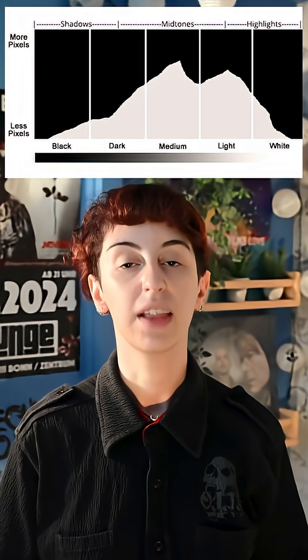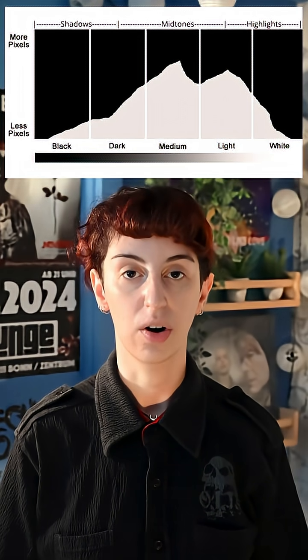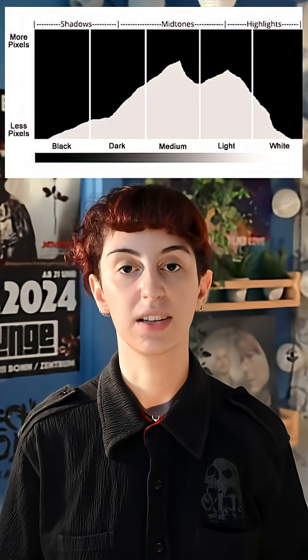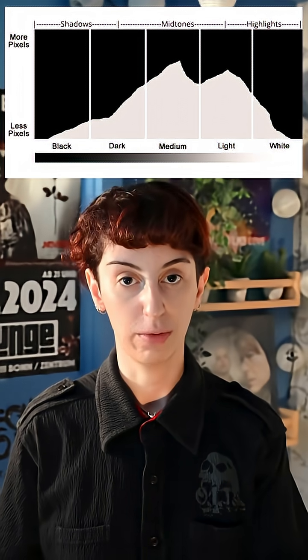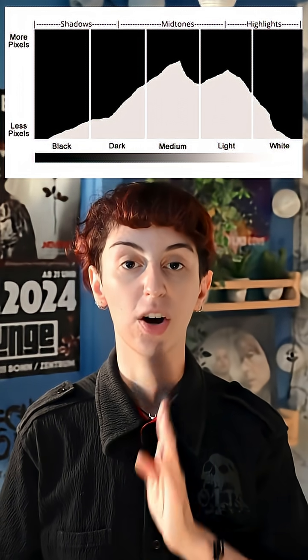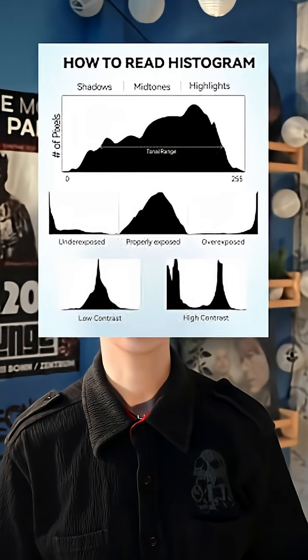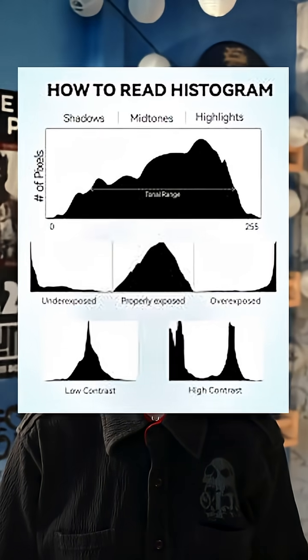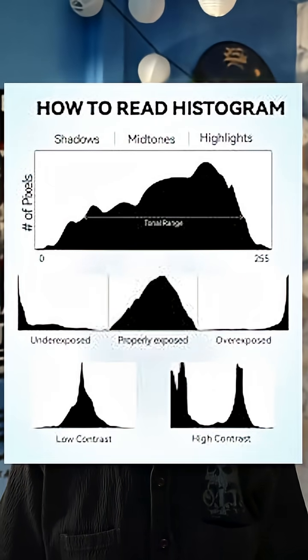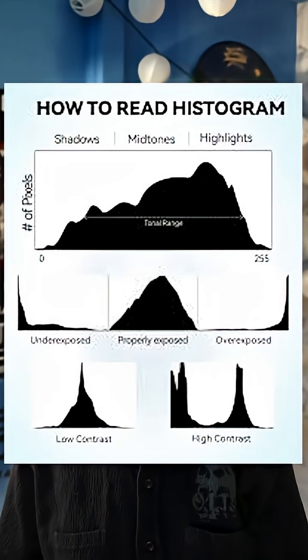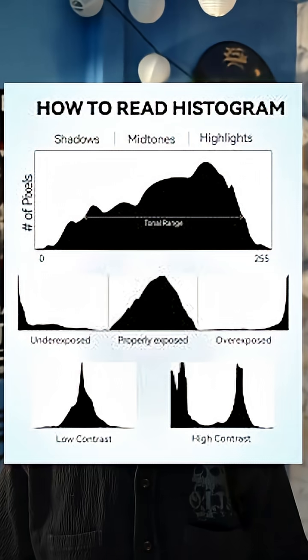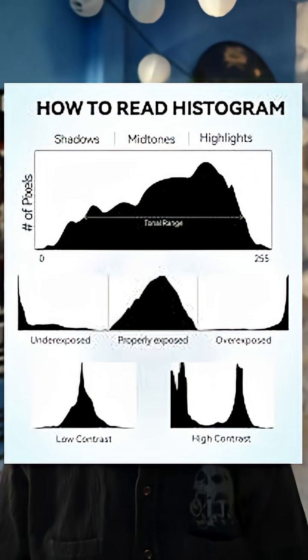If it's bunched up to the left then it is more dark; if it's bunched up to the right then it is more exposed, or where you preferably want it to be is a curve towards the center. This is a bit more abstract because it doesn't have measurable or quantifiable characteristics like the waveform monitor does, but in general if your image is weighted toward the left it is probably underexposed, if it is weighted toward the right it is probably overexposed, and if it's in the center it is somewhere between proper exposure.